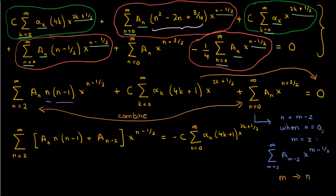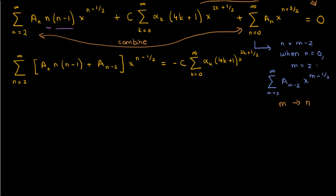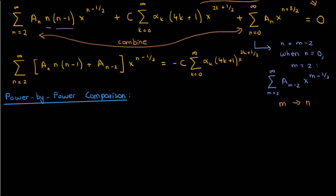Now we can start solving. To find c and capital A sub n we do a power-by-power comparison: comparing like powers on both sides and equating their coefficients, giving a system of equations. Starting with the lowest possible power on x, which is 1/2: on the right side we get negative c times alpha naught times the square root of x, but on the left we get 0. Since alpha sub 0 and the square root of x are not zero, we must have c equals 0.